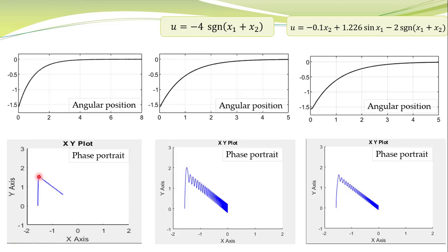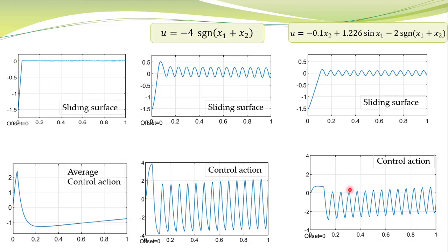In the case of ideal sliding mode control — without actuator dynamics — there is no chattering, and as soon as the trajectories reach the sliding surface they slide along it to the equilibrium at the origin. When conventional sliding mode control is used with actuator dynamics incorporated, chattering appears. With the reduced-magnitude approach, chattering is still present but its magnitude is reduced.